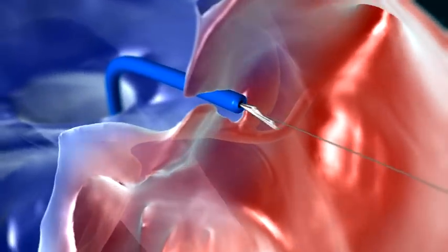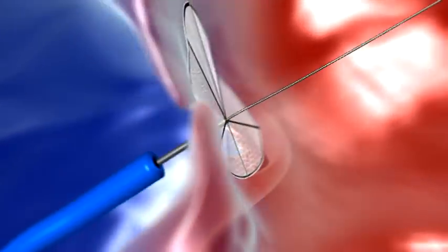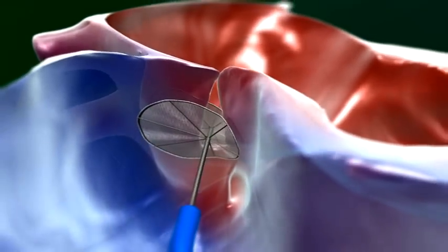The first envelope is unfurled. After this, the delivery catheter is retracted to unfurl the second envelope into the right atrium.